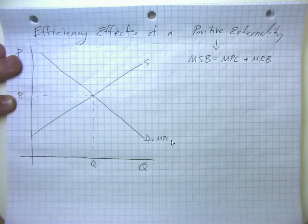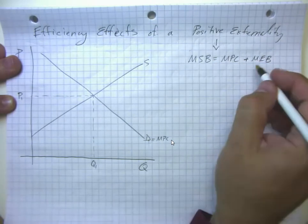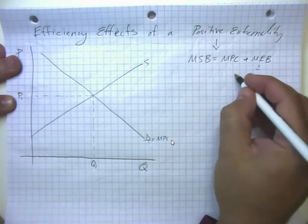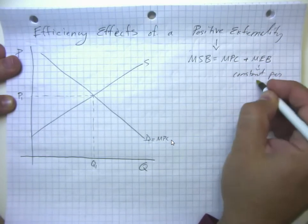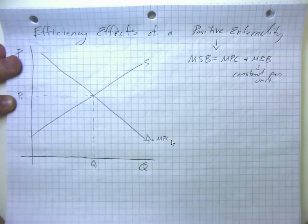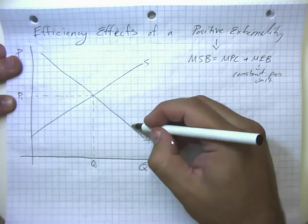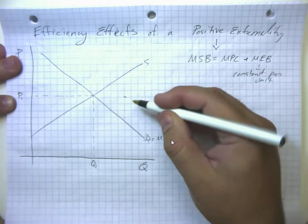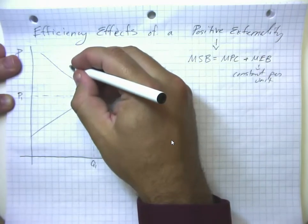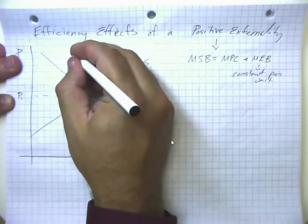Let's again say the external benefit is constant per unit in this case. We'll come to more complicated cases in a bit. Let's say that it's about four squares. So one, two, three, four, and one, two, three, four.